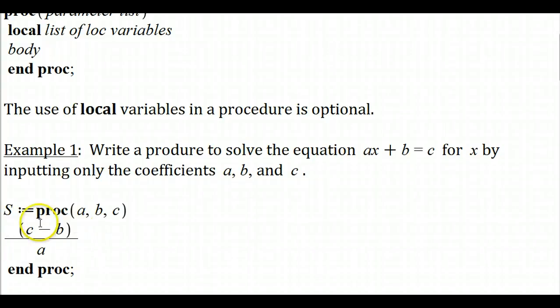Maple is going to compute this number right here which is the solution and that's going to end the procedure and that's going to output whatever we computed, whatever the last thing computed was in the body, and there's only one thing computed in the body of the procedure for this example.